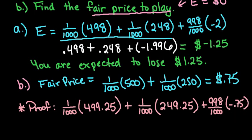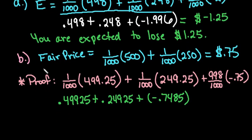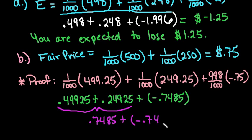So if you go through and you calculate, this part right here gives me 0.49925 plus 0.24925 plus this part gives me negative 0.7485. And then if I add these all together, this part right here, if I take 0.49925 plus 0.24925, I get 0.7485 plus negative 0.7485, which gives me an expected value of 0.